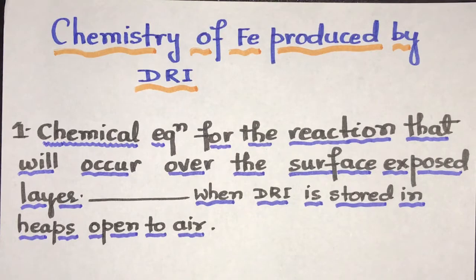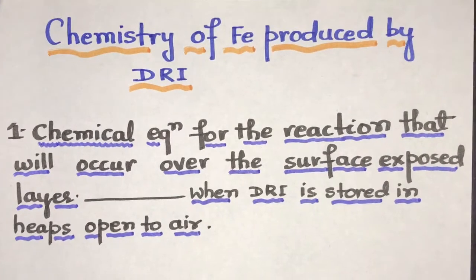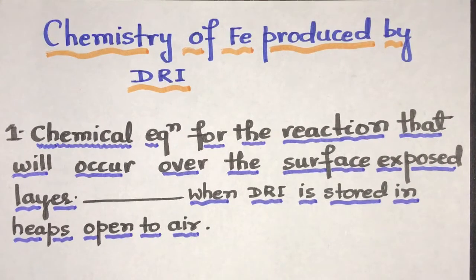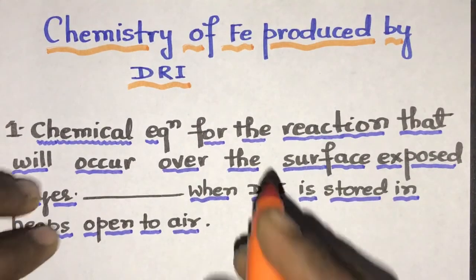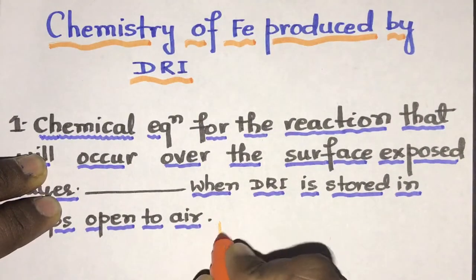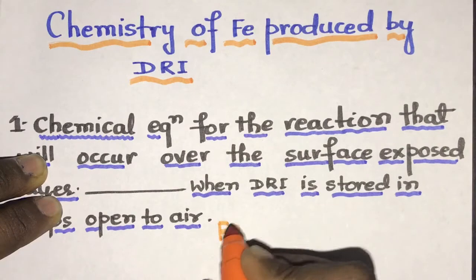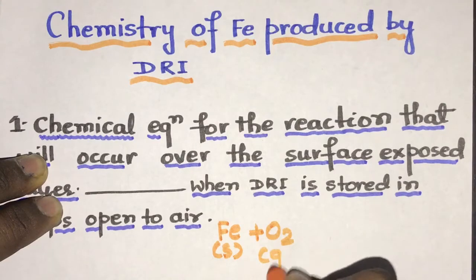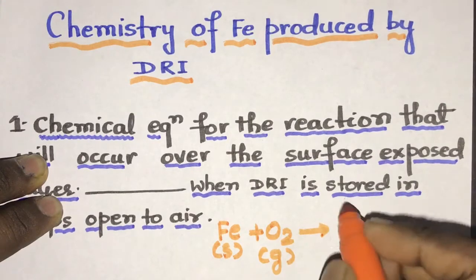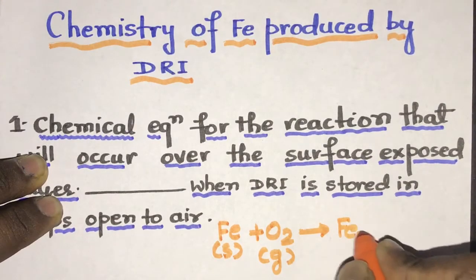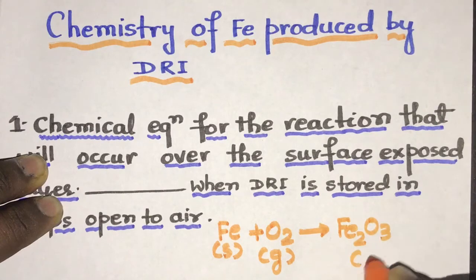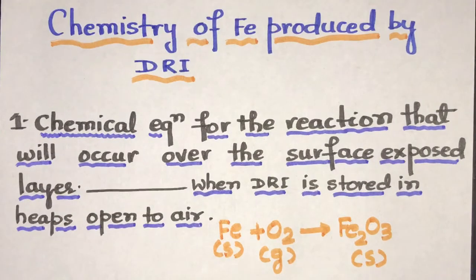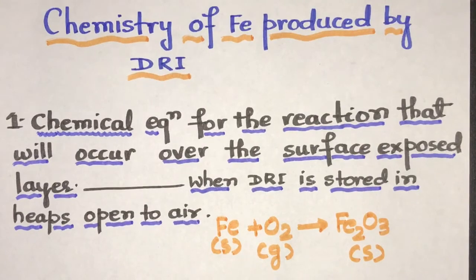So basically here the DRI will be in contact with air and oxidation reaction will take place - iron in solid state plus O2 in gaseous state will form Fe2O3. That is the rust or the oxidation of iron will take place.